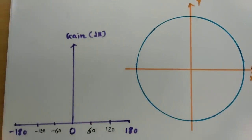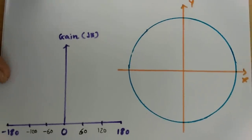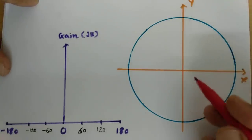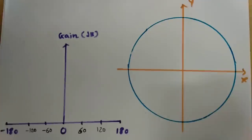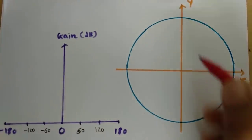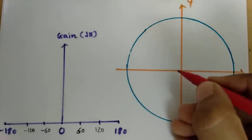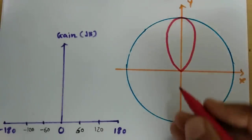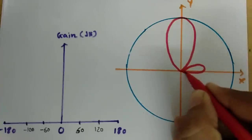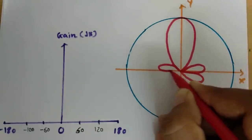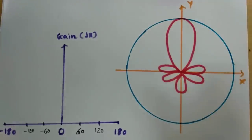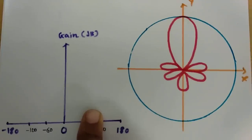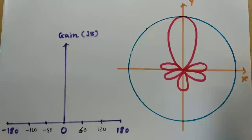I will explain this radiation pattern in two ways. Here, I have an antenna which is radiating in the XY plane. I will explain how this radiation pattern happens with the axial mode of radiation pattern and how it is there with the circular mode of radiation pattern.